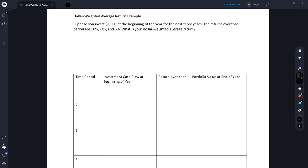In this example, we are going to figure out the dollar-weighted average return of a particular investment. So in this investment, we are going to invest $1,000 at the beginning of the year for the next three years.